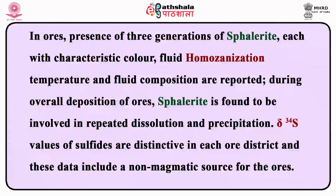In ores, three generations of sphalerite, each with characteristic colour, fluid homogenization temperature, and fluid composition, are reported during overall deposition. Sphalerite is found to be involved in repeated dissolution and precipitation. Delta S34 values of sulphides are distinctive in each ore district and these data indicate a non-magmatic source for the ores.